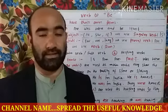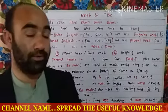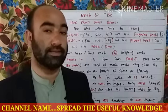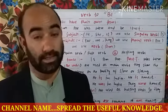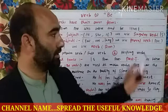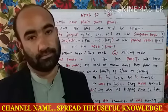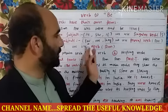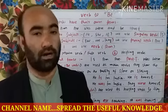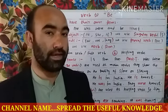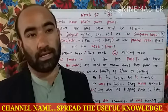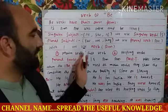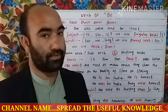Is, am, are, was, were, and be itself — these are the forms of the be verbs. Keep in mind: with singular subjects — he, she, it — we use the singular verb 'is'. With plural subjects — you, we, they — we use the plural verb 'are'. And with 'I', we use the verb 'am'.